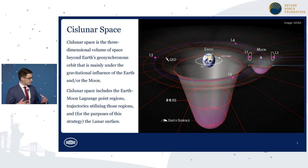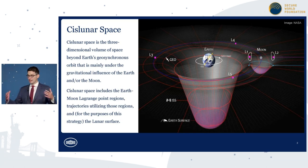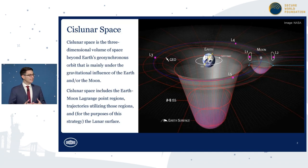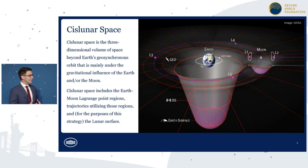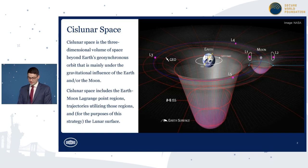A strategy like this from my organization allows us to coordinate and focus science and technology activities across the United States government. This is first and foremost about talking to science and technology organizations within the United States government. Before we go into the details of the cislunar strategy itself, I want to talk briefly about the importance of this topic.